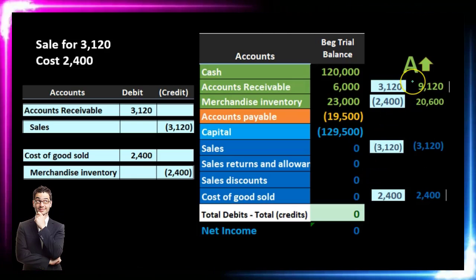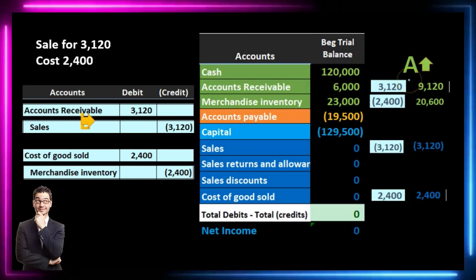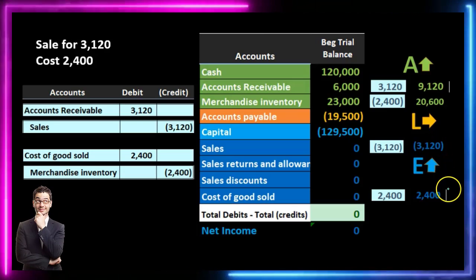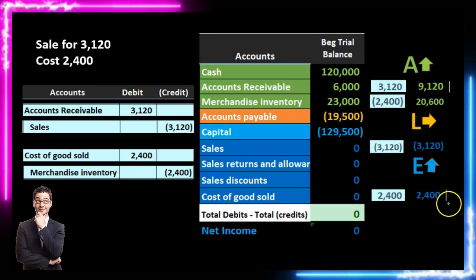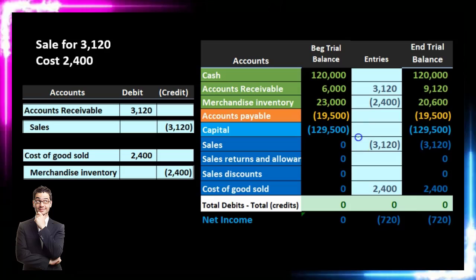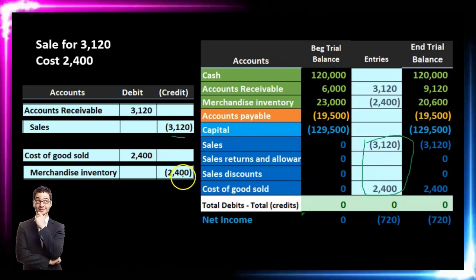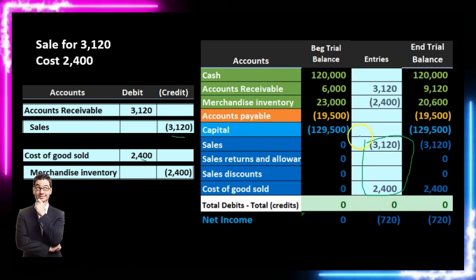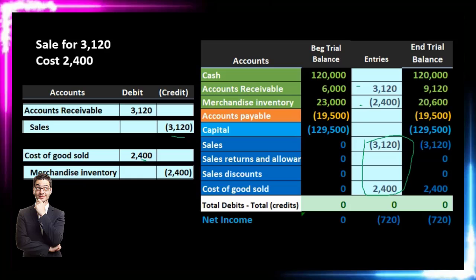For the accounting equation effect with both journal entries: assets went up by accounts receivable and down by merchandise inventory for a net increase. Liabilities stay the same. Equity went up by revenue and down by the increase in expenses, since net income equals revenue minus expenses. Net income increased by $720 — the sales of $3,120 minus cost of goods sold of $2,400. Assets also net to that same $720 increase.